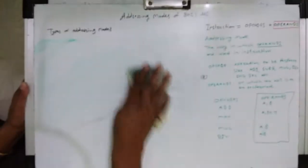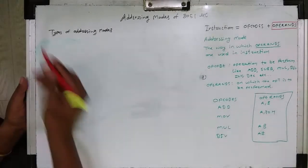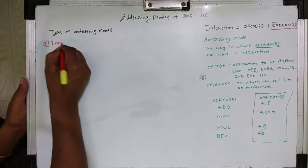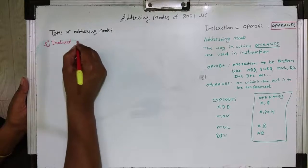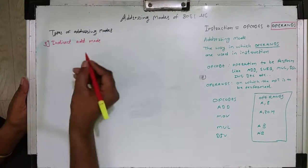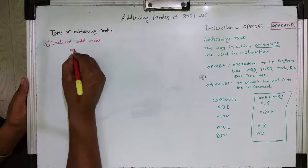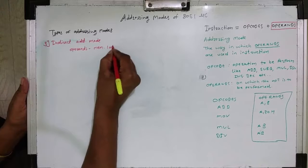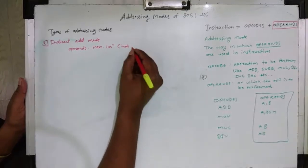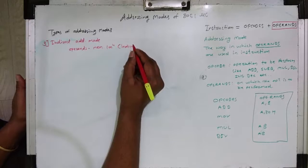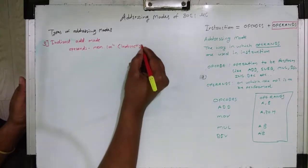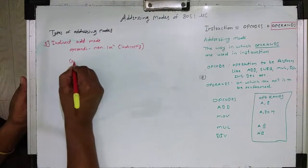Now the third addressing mode is register indirect addressing mode, or simply indirect addressing mode. Here, the operand consists of a memory location but indirectly — the meaning of indirect is that memory pointer registers R0 or R1 are used as memory pointers.